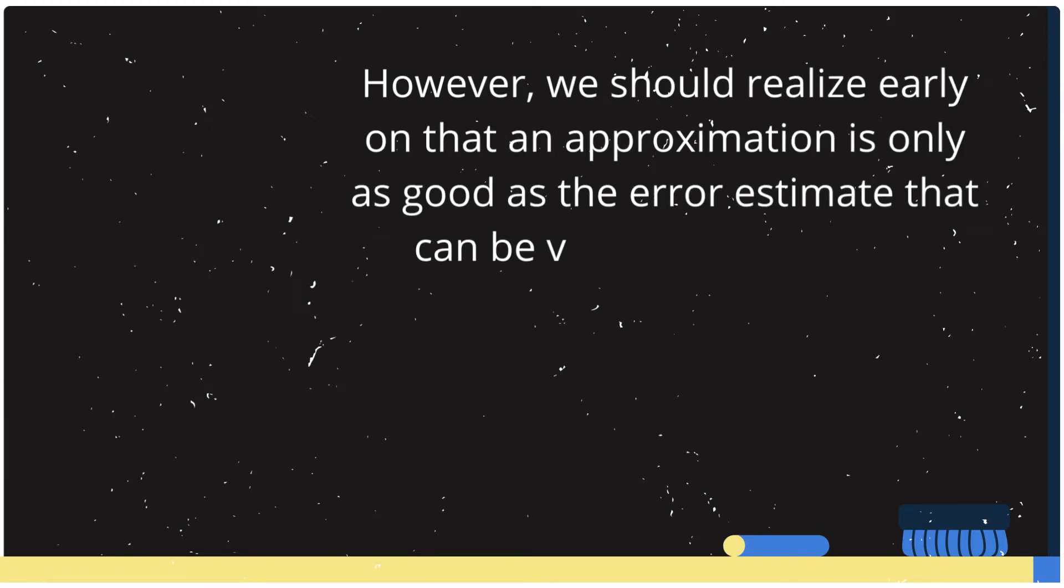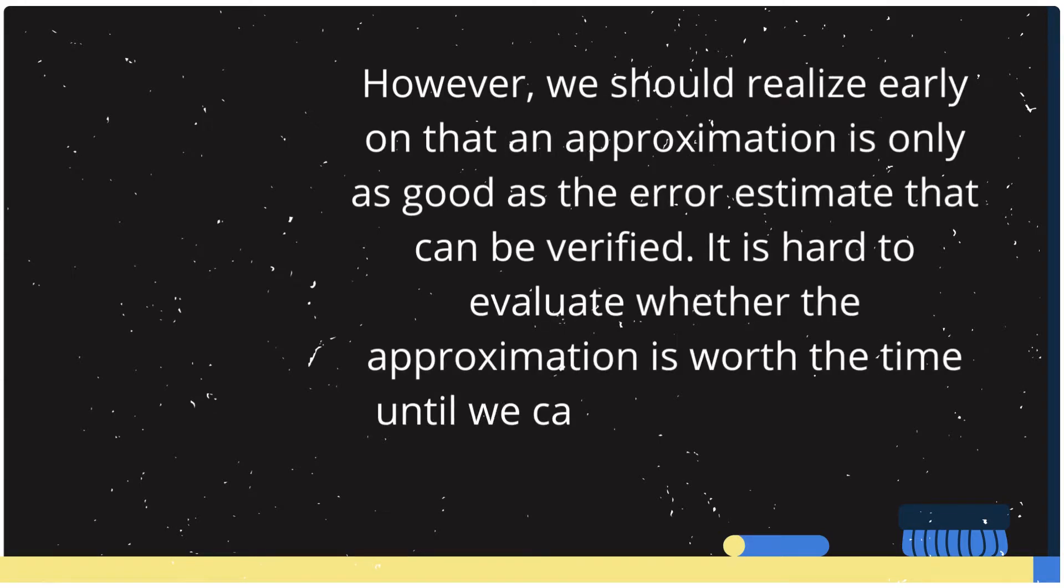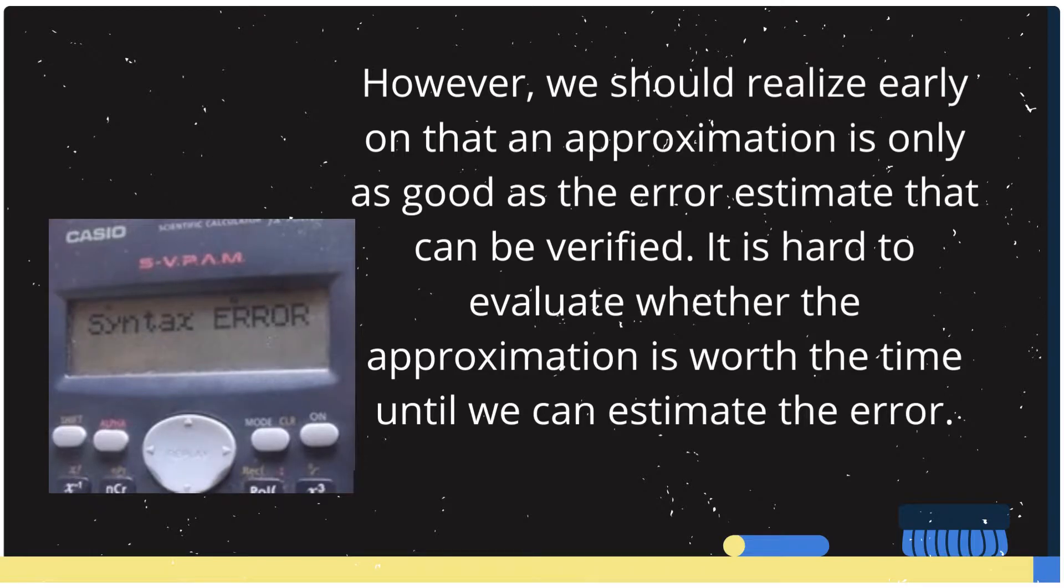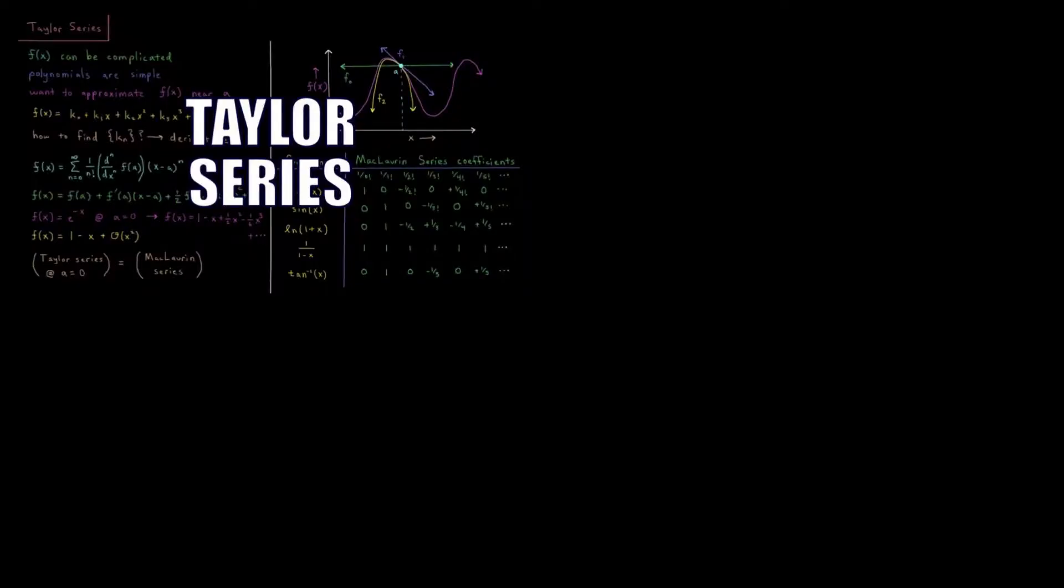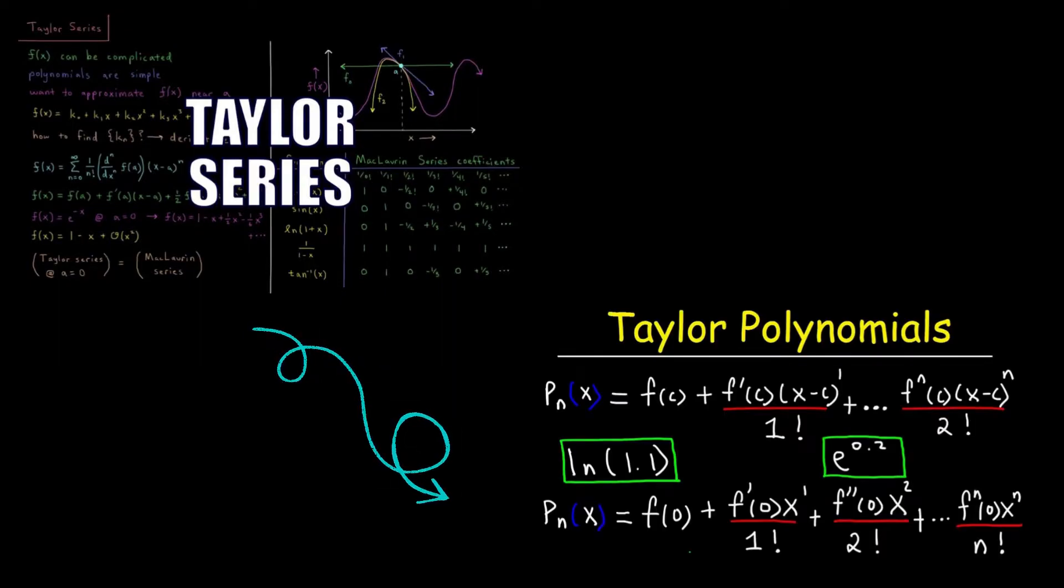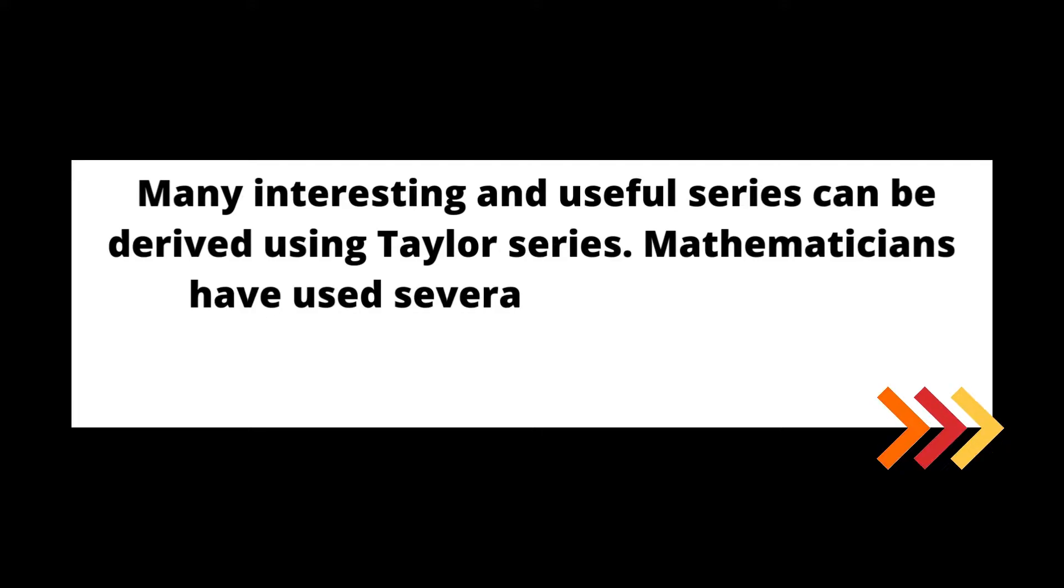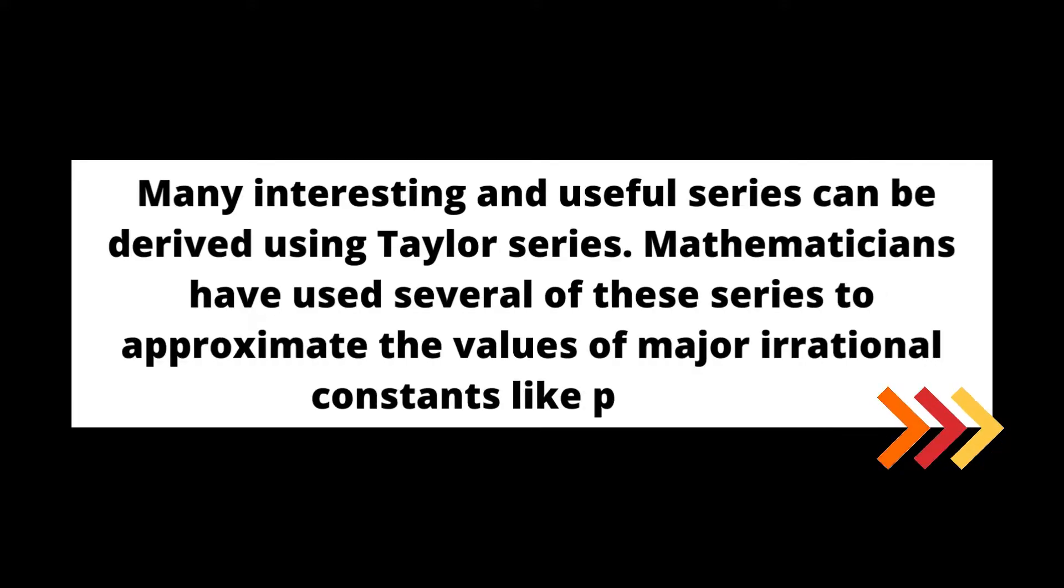However, we should realize early on that an approximation is only as good as the error estimate that can be verified. It is hard to evaluate whether the approximation is worth the time until we can estimate the error. We can obtain an approximation by truncating the infinite Taylor series into a finite degree Taylor polynomial, which we can evaluate. Many interesting and useful series can be derived using Taylor series. Mathematicians have used several of these series to approximate the values of major irrational constants like pi and e.